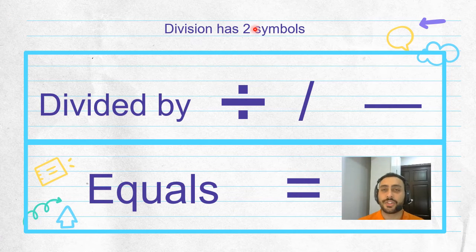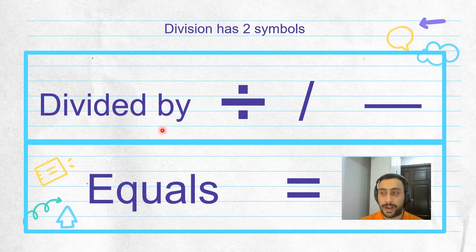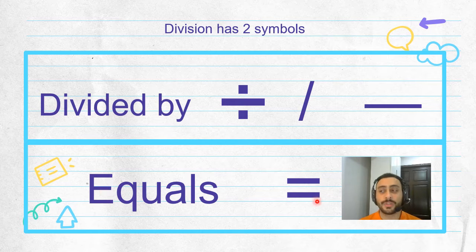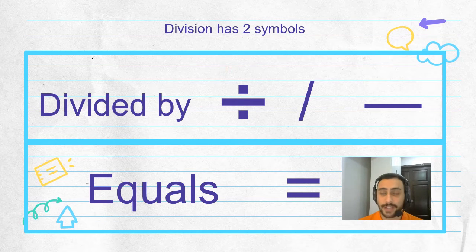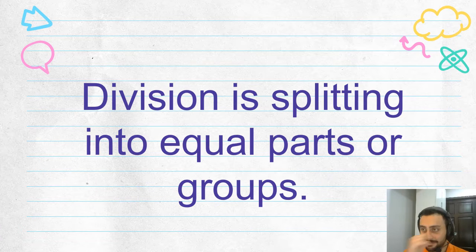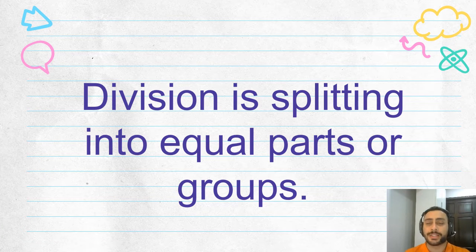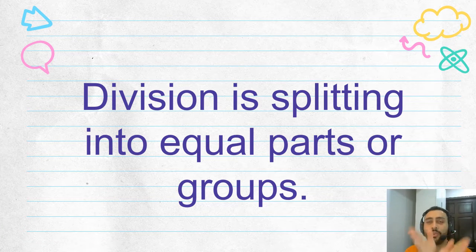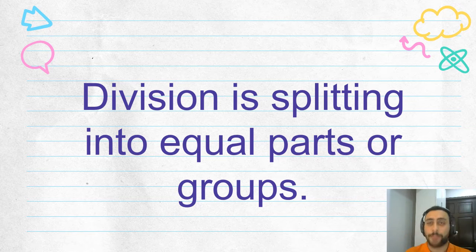Now, division has two symbols. Divided by and equals, which you already know. This is divided by. As you remember, division is splitting into equal groups or parts.